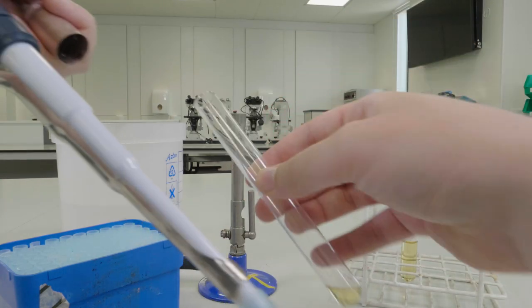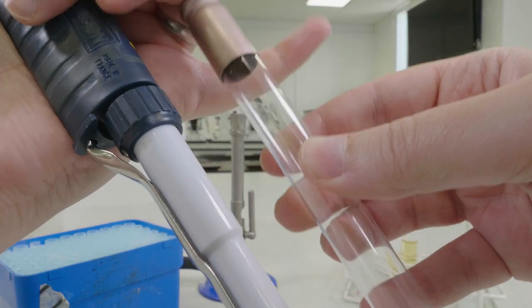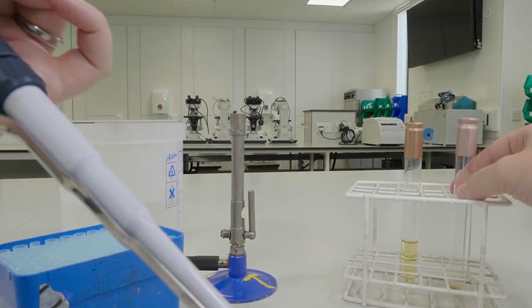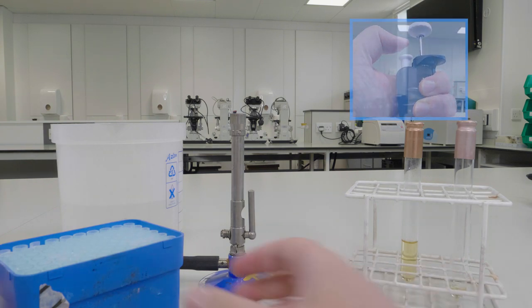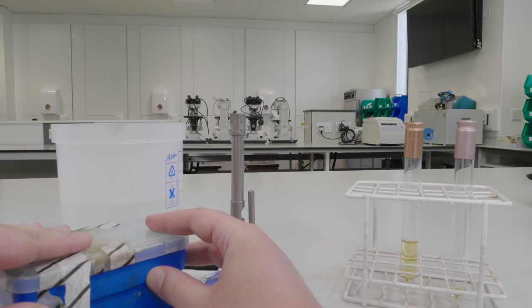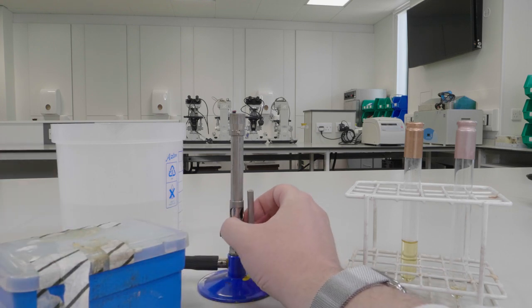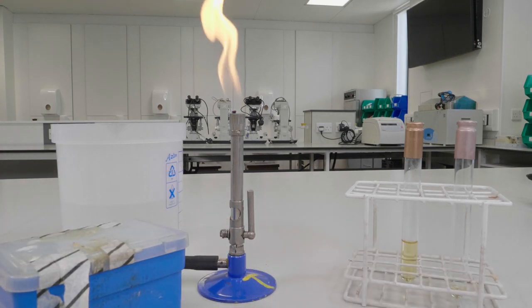Flame the neck of the tube once more, place the lid back on and then place this into the rack. Eject the tip into the dispo jar using the eject button on the top of the pipette and then close the lid of your tip box before turning your flame back onto the yellow safety flame.